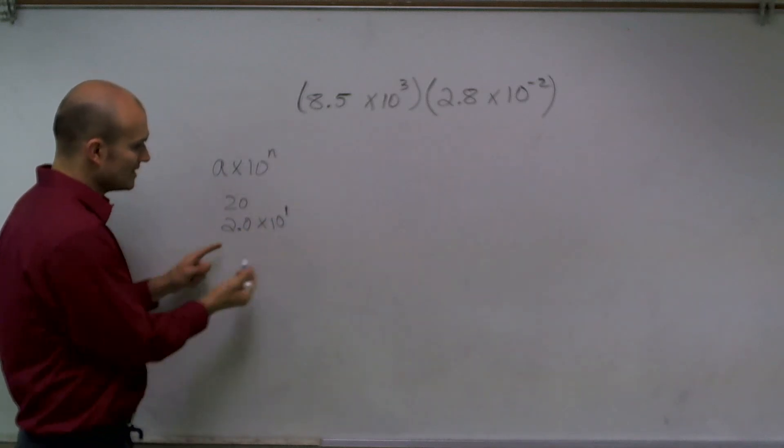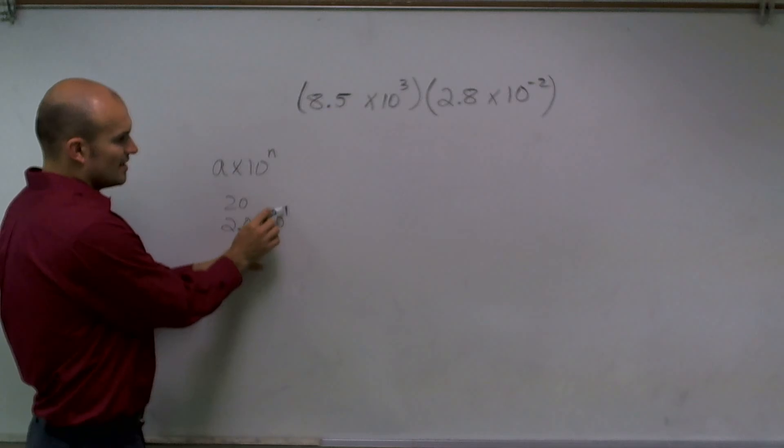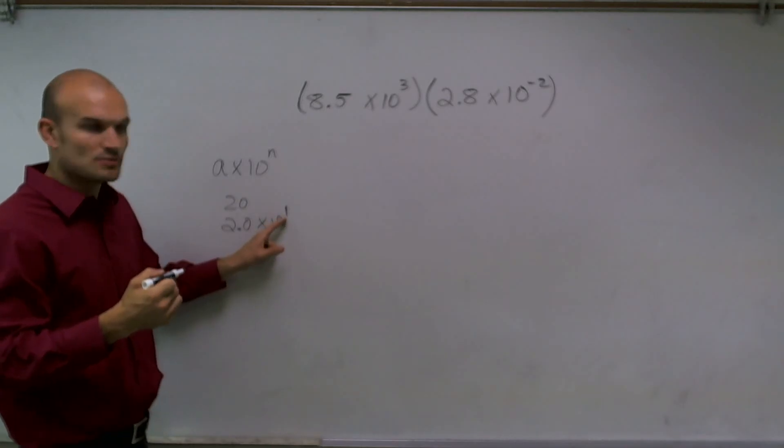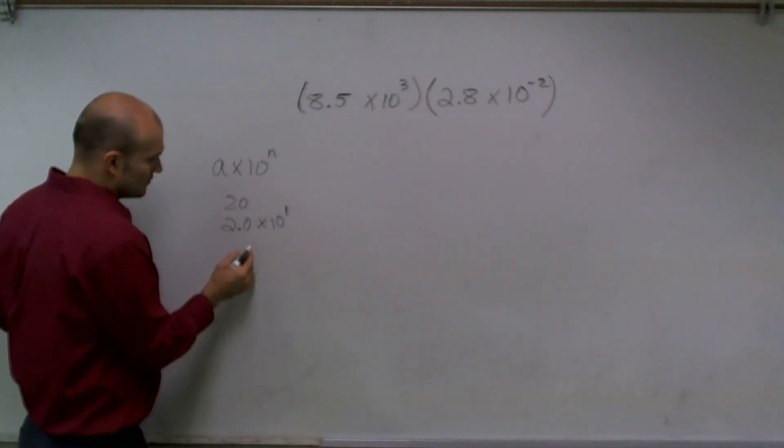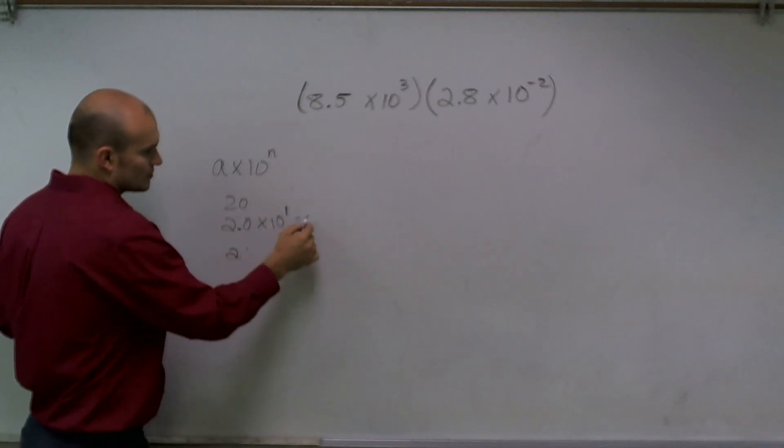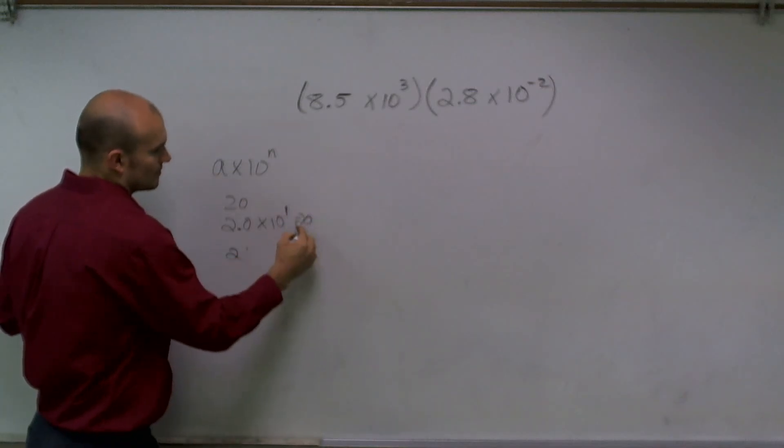Because what that's going to tell me is, if I was to simplify this, 10 to the first power is going to move the decimal point over 1 unit. So I'll be left with 20.